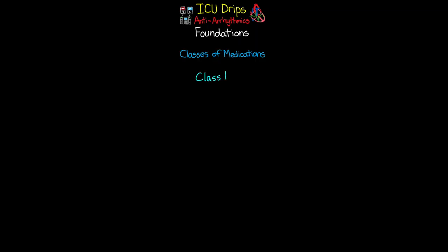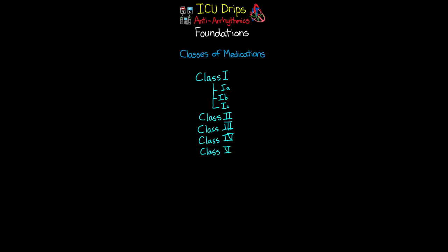Class one is unique in that it's further divided into three subclasses: 1A, 1B, and 1C. There are some unique differences between the medications within these subclasses, though they share a similar structure. Then we have class two, class three, class four medications, and for the fifth and final class you'll either see it referred to as class five or as 'other antiarrhythmic agents.' These are the five classes and three subclasses of class one. In the next lesson we'll do a deep dive into each class and cover medications commonly encountered in the ICU.